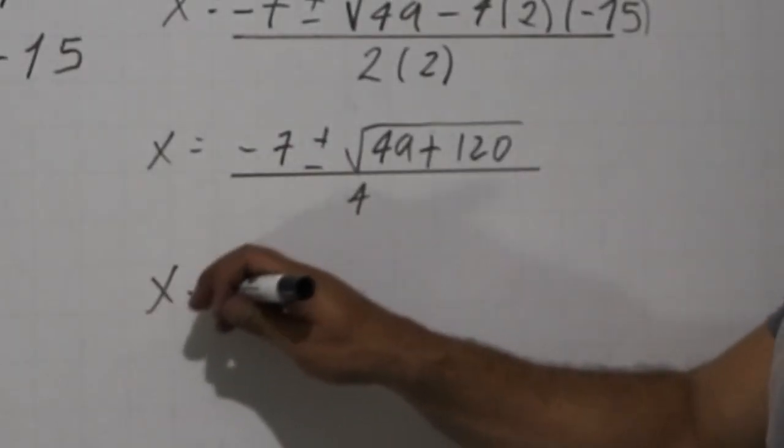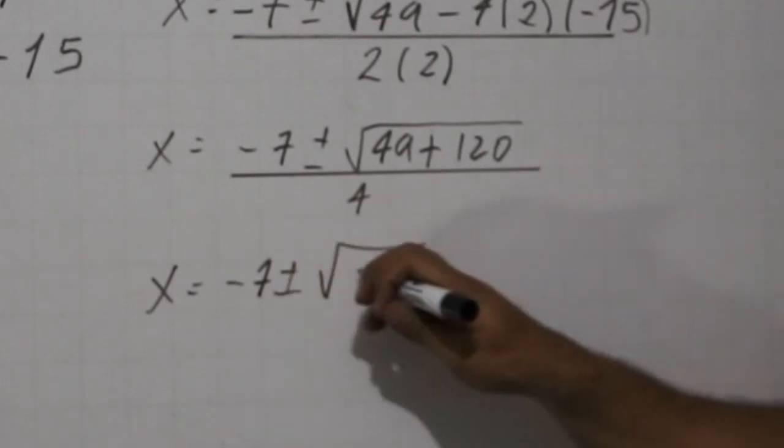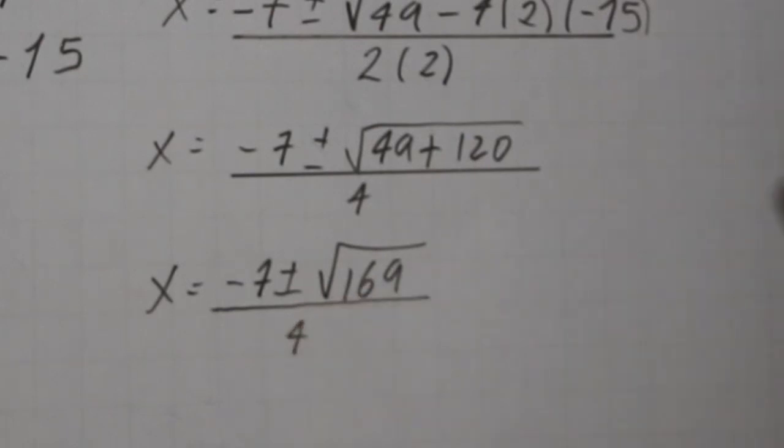If we add those numbers inside the square root, we're going to get 169.